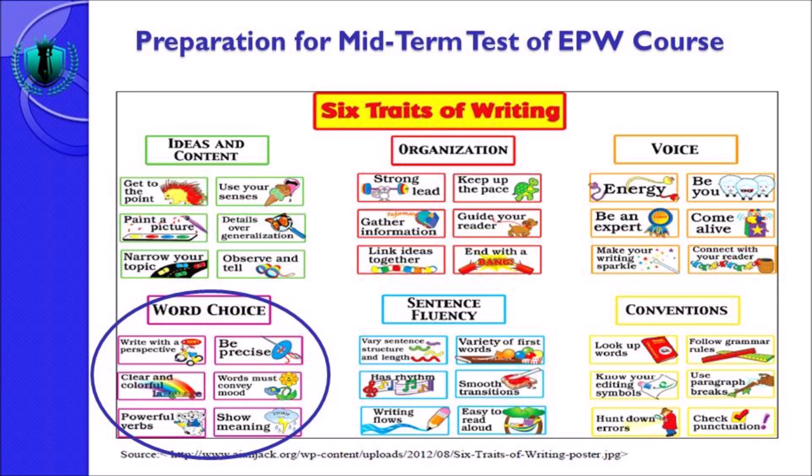Yang kedua, be precise — harus tepat dalam menulis. Kalau sudah yakin benar ini yang anda maksudkan, tuliskan. Tapi kalau anda tidak yakin, tidak perlu anda menulis. You have to be sure that you write your writing in such a precise way. Yang ketiga, clear and colorful — anda menulis dengan pilihan kosa kata yang jelas dan tepat tapi berwarna.